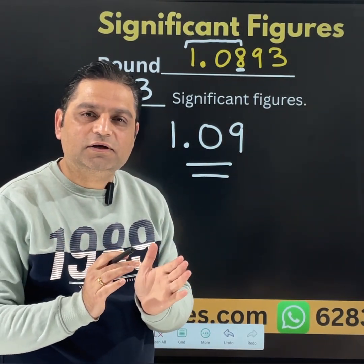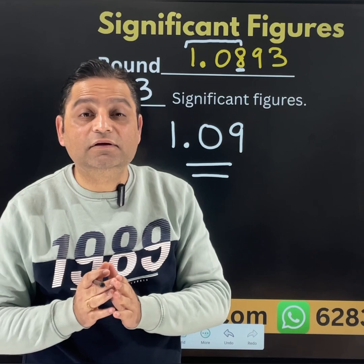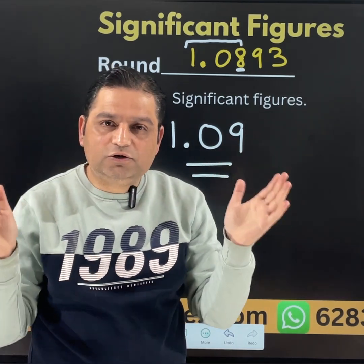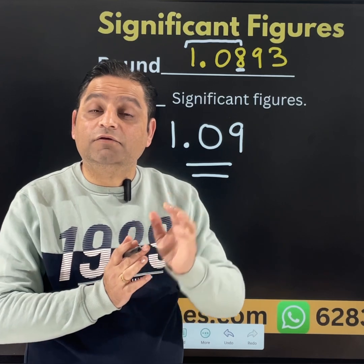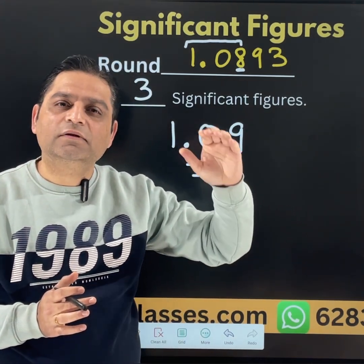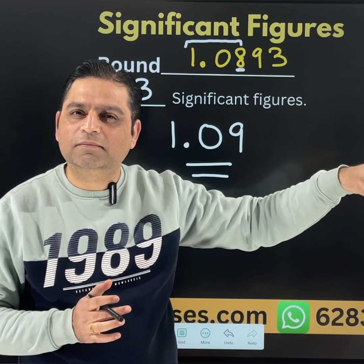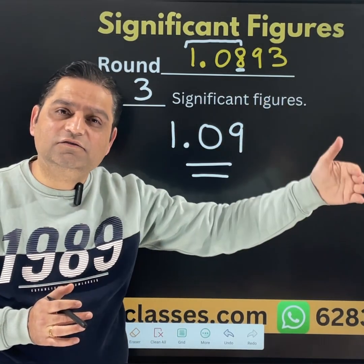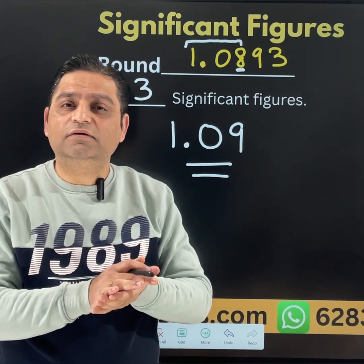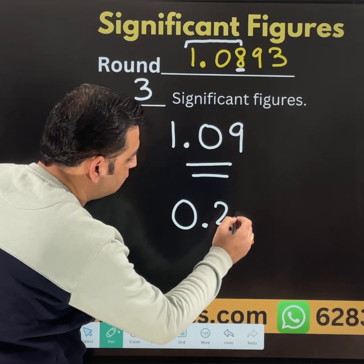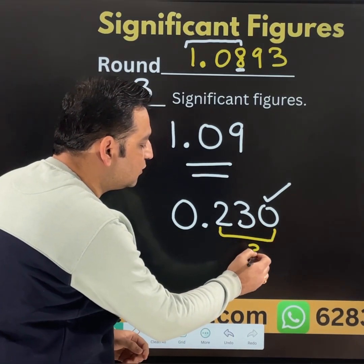Let us recap the rules we have studied today. Zeros at the start — leading zeros — will never be considered significant figures. Zeros in the middle of any two natural numbers will be considered significant. For a number without a decimal point, ending zeros will not be considered significant. However, if there is a decimal number, like 0.230, the trailing zero after the decimal is counted as significant, making it 3 significant figures.